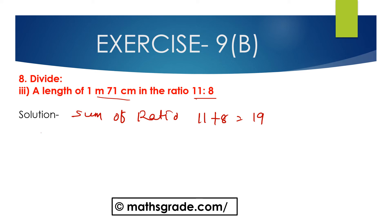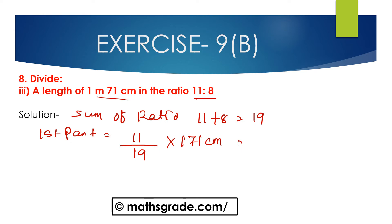The first part — antecedent is 11 — is 11 divided by total ratio 19, multiplied with 171 centimeters. Canceling 19 and 171: 19 multiplied by 9 is 171, so 11 multiplied by 9 is 99 centimeters.